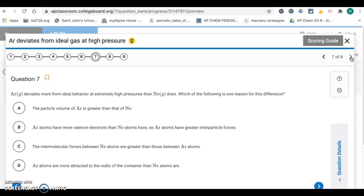Question 7. Argon deviates more from ideal gas or ideal behavior at extremely high pressure than neon does. Which of the following is one reason for this difference? So ideal behavior assumes that the particles do not have volume and they don't exert forces on each other. So letter A is the answer. The particle volume of argon is greater than that of neon. So that would make it deviate more. It would be less ideal. So the rest of the choices, like argon has the same number of valence electrons as neon. Intermolecular forces between neon atoms is greater. This is backwards. Argon would have stronger intermolecular forces. Argon atoms are more attractive than wall of the container. That has nothing to do with this, whether it's ideal or not. So it's letter A.